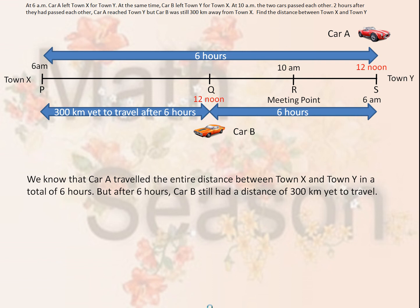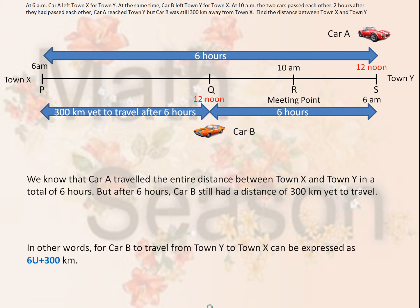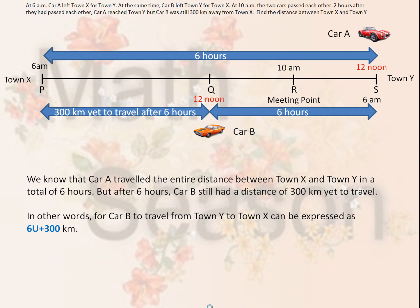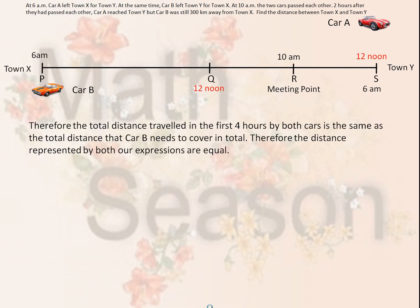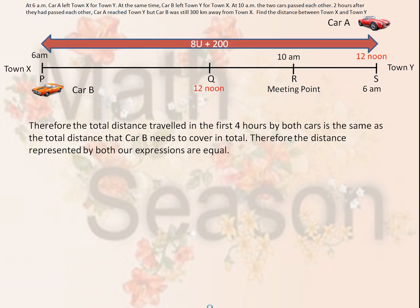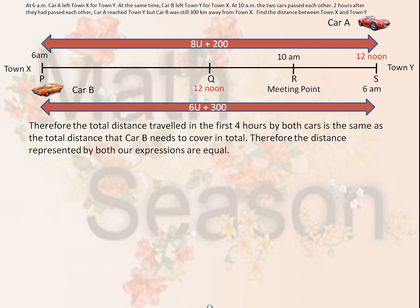We know that car A traveled the entire distance between town X and town Y in a total of 6 hours, but after 6 hours, car B still had a distance of 300 kilometers yet to travel. In other words, the total distance from town Y to town X for car B can be expressed as 6U plus 300 kilometers. Therefore, the total distance traveled in the first 4 hours by both cars is the same as the total distance that car B needs to cover in total, so both expressions are equal: 8U plus 200 and 6U plus 300.